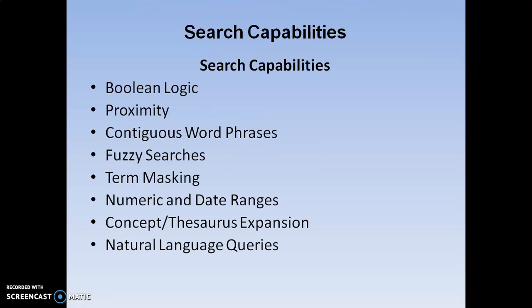Coming to the search capabilities, they can be divided into 8 types. These 8 are the various search capabilities, each having its own speciality. The first one is Boolean operators, the second is proximity, the third is contiguous word phrases, the fourth is fuzzy searches, the fifth is term masking, the sixth is numerical and date ranges, the seventh is concept and thesaurus expansion, and the last one is natural language queries.